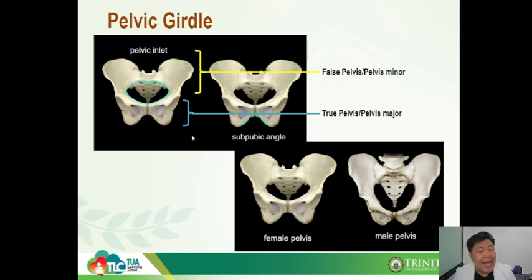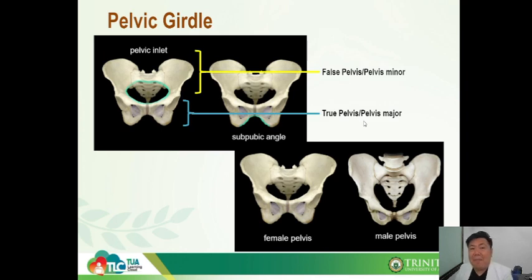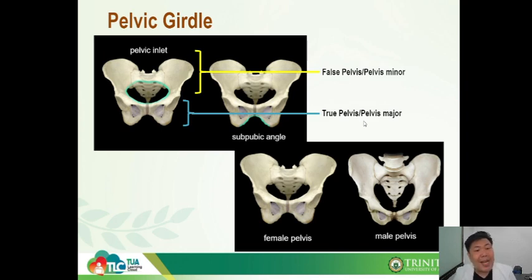The structures found below the pelvic inlet are called the true pelvis or pelvis major. The purpose of showing that picture is to help you differentiate what is the false pelvis and what is the true pelvis.